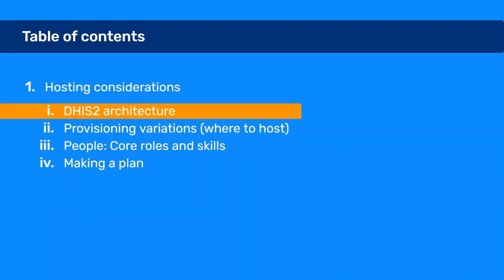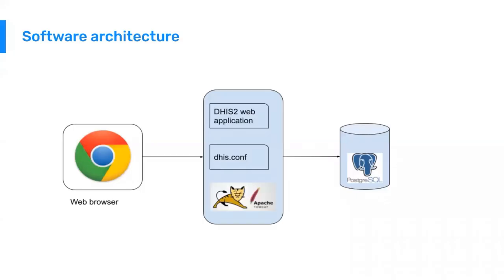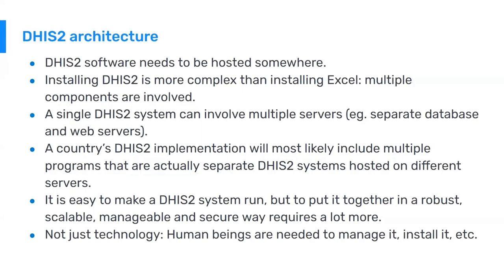To begin, let's try to understand a little bit more about the DHIS2 architecture itself. DHIS2 is a web application, which means that people access it through a web browser. It can be set up quite simply using a piece of software like Apache Tomcat to host the DHIS2 web application, which in turn uses a PostgreSQL database as a back end. In reality, setting it up in a production setting requires quite a lot more consideration.